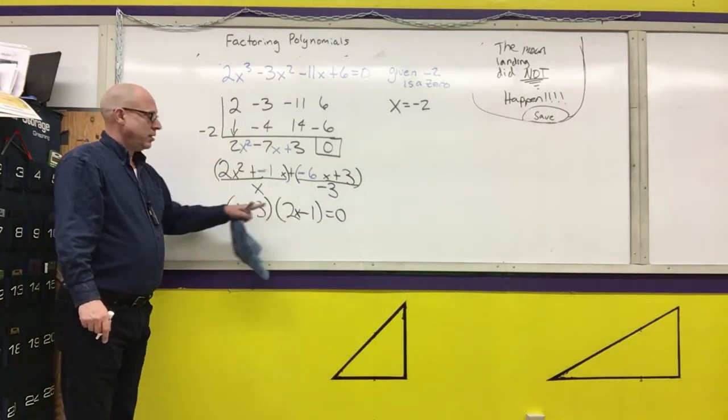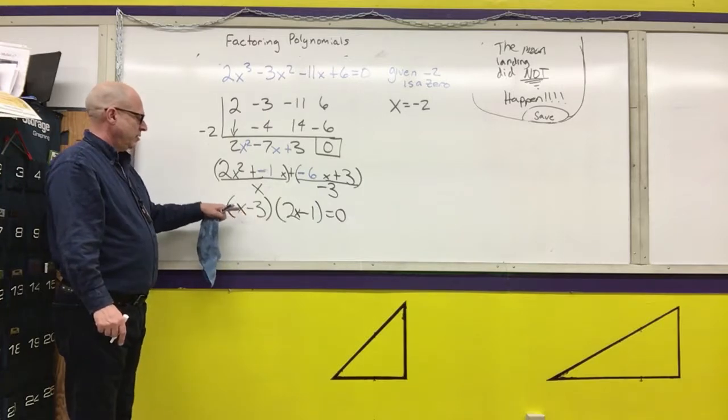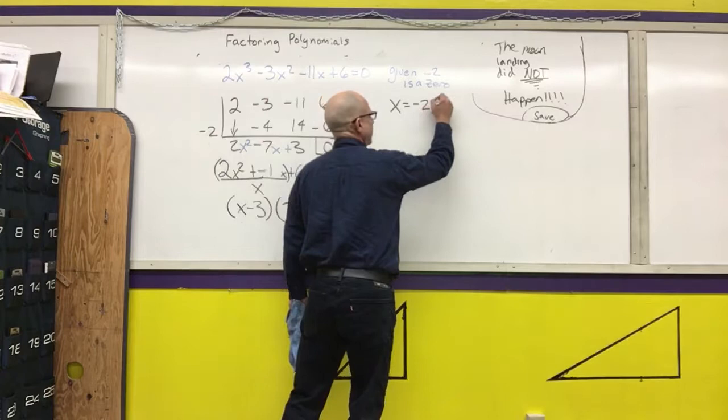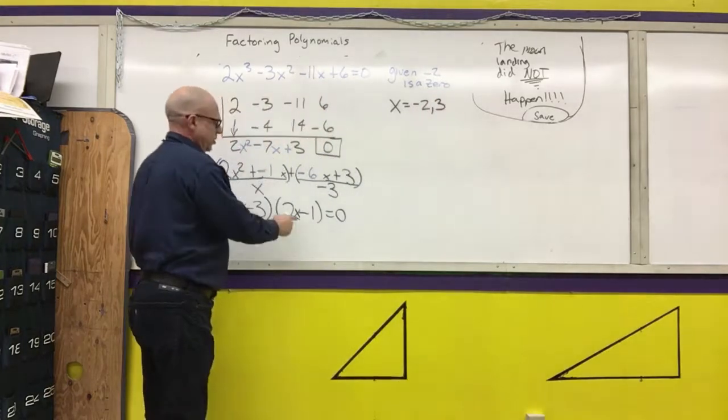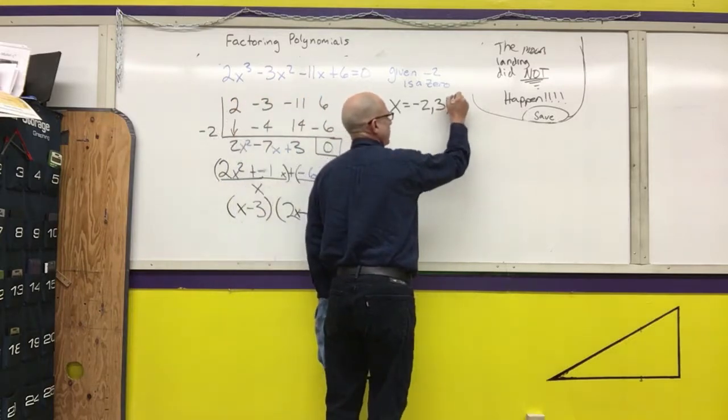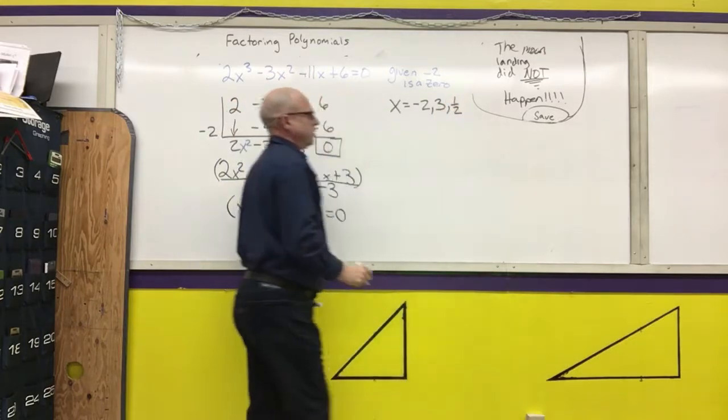If these are factors, then I can find the zeros by setting them equal to 0. If x minus 3 is equal to 0, then x is equal to 3. And if 2x minus 1 is equal to 0, then 1/2 is equal to x.